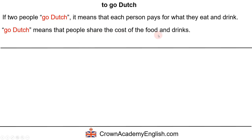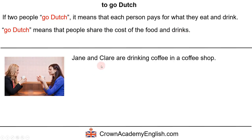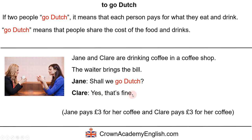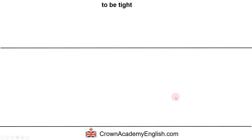Here is an example: Jane and Claire are drinking coffee in a coffee shop. The waiter brings the bill, and Jane proposes 'Shall we go Dutch?' — meaning shall we each pay for our own coffee. Claire says yes, so Jane pays three pounds for her coffee and Claire also pays three pounds for hers. We can say that Jane and Claire went Dutch — 'went' being the past simple of 'go.'